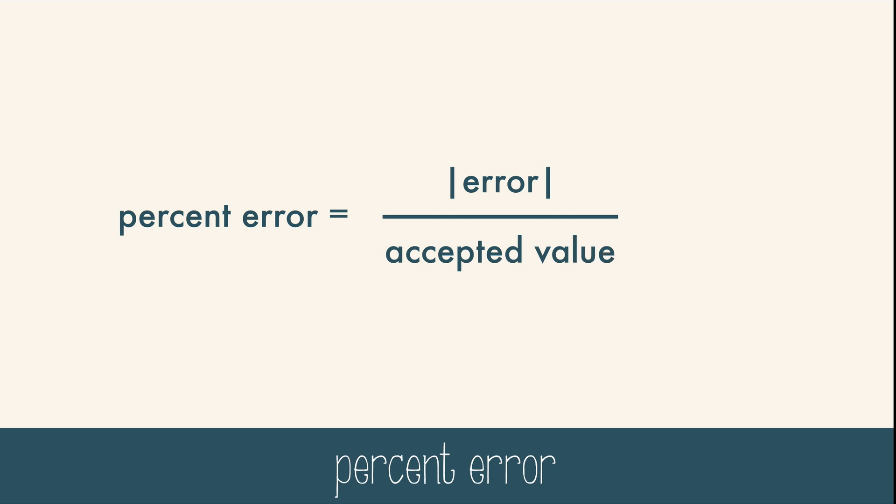At the end of an experiment you can calculate the error compared to an accepted or true value. You take the experimental value, which is what you actually found, and subtract the accepted value, which is the correct value based on reliable resources. You could also calculate percent error, which shows the amount by which the experimental value differs from the accepted value. In this case you take the absolute value of the error and divide by the accepted value, and then you multiply by 100 percent. The closer the answer is to zero, the better the accuracy.